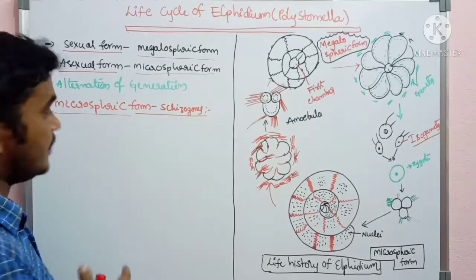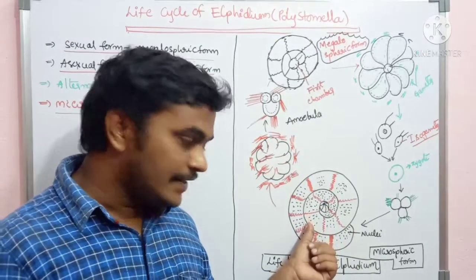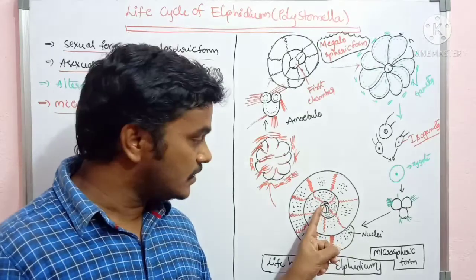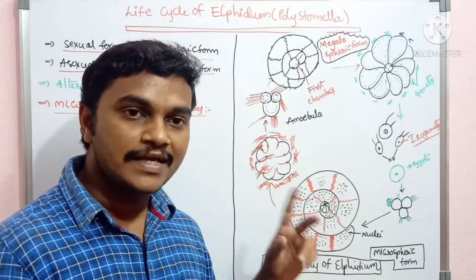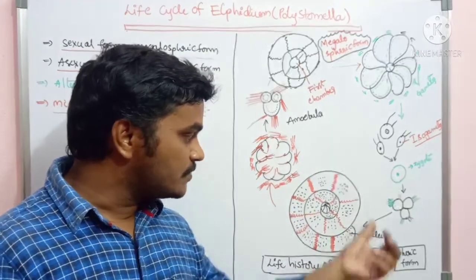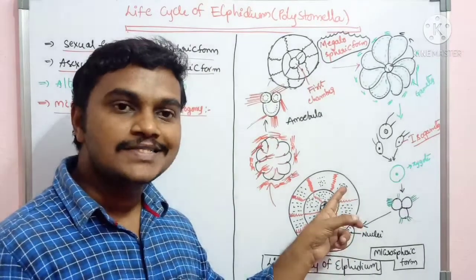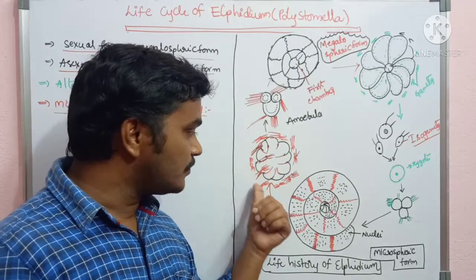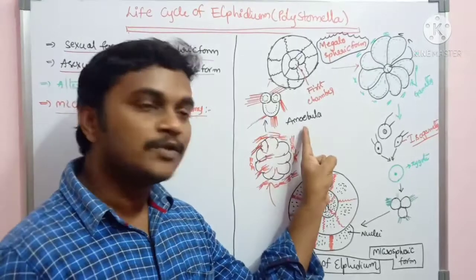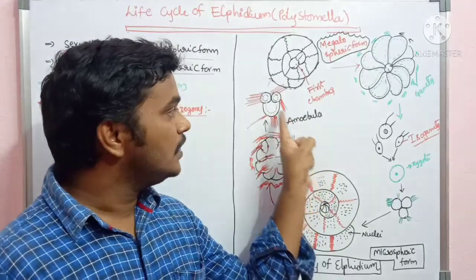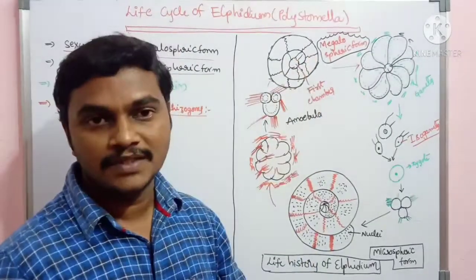In the microspheric form, which undergoes asexual reproduction, this microspheric form contains a single initial cell chamber called the proloculum. This proloculum contains a number of chambers, and every chamber contains cytoplasm in two forms — exoplasm and endoplasm. The cytoplasm and nuclei are eliminated to the outside from the body of the microspheric form. Each nucleus attains some cytoplasm and forms a special type of structure called an amoebula. These amoebulae contain locomotory structures, and each amoebula forms a first chamber called the proloculum.